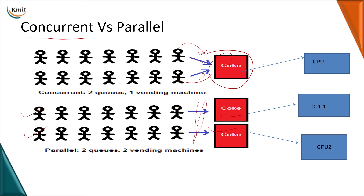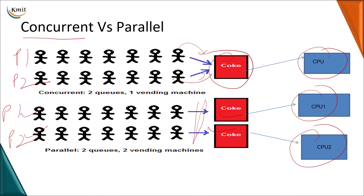In the parallel case, both queues are being serviced simultaneously. The vending machine can be treated as a CPU — in concurrent, we have a single CPU; in parallel, we have multiple CPUs, and the two queues can be treated as problem one and problem two. This is the difference between concurrent versus parallel execution: concurrent does not mean the problems are solved simultaneously — there will be a time gap between the solutions provided to the problems.